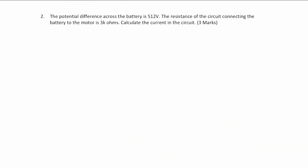This next question is based off another exam question, worth three marks, and it's another electricity question. The potential difference across the battery is 512 volts — linked to the question above. The resistance of the circuit connecting the battery to the motor is 3 kilohms. Calculate the current in the circuit. Feel free to pause the video and have a go, but let's get into the answer.